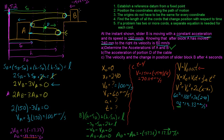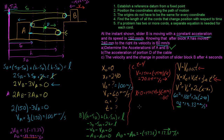For the change in position of slider B after four seconds, using x = x₀ + V₀·t + ½·a·t²: with x₀ = 0, V₀ = 150 mm/s, a = −19.99 mm/s², and t = 4 s: x = 0 + 150(4) + ½(−19.99)(4²) = 440 mm. So slider B moves 440 millimeters after four seconds.